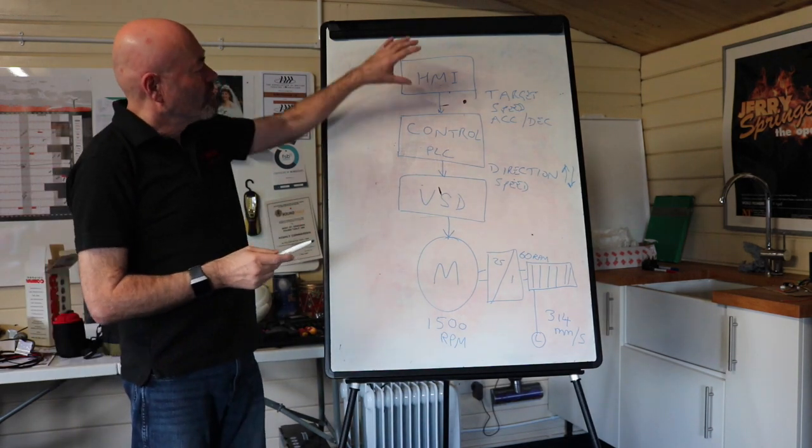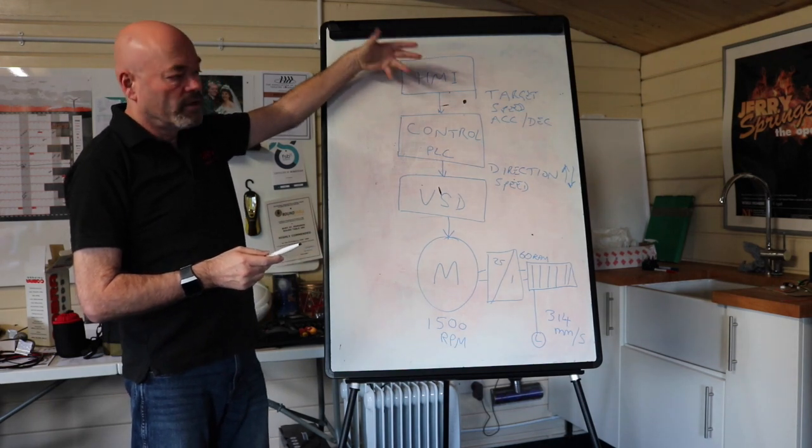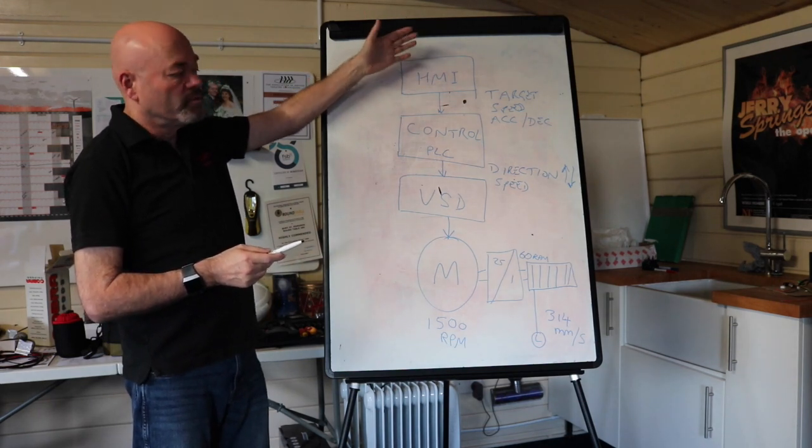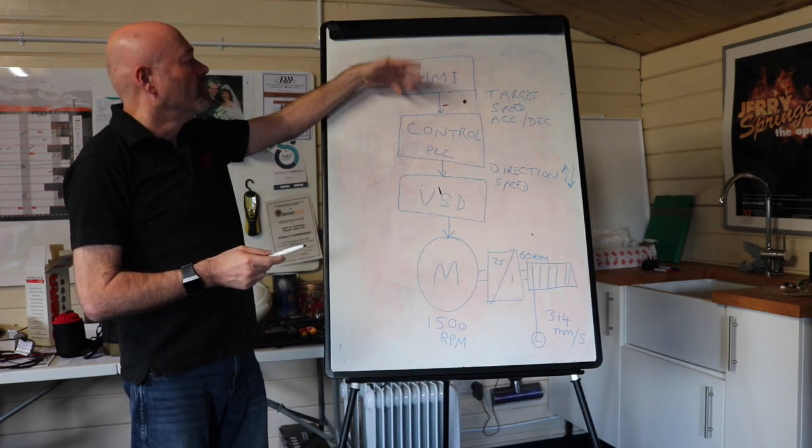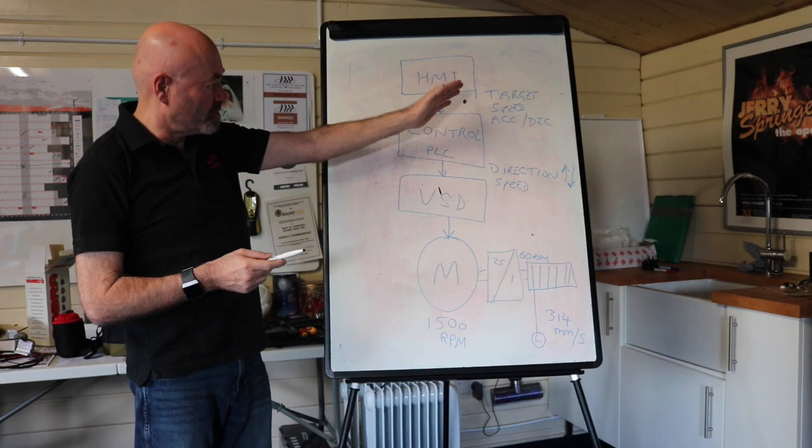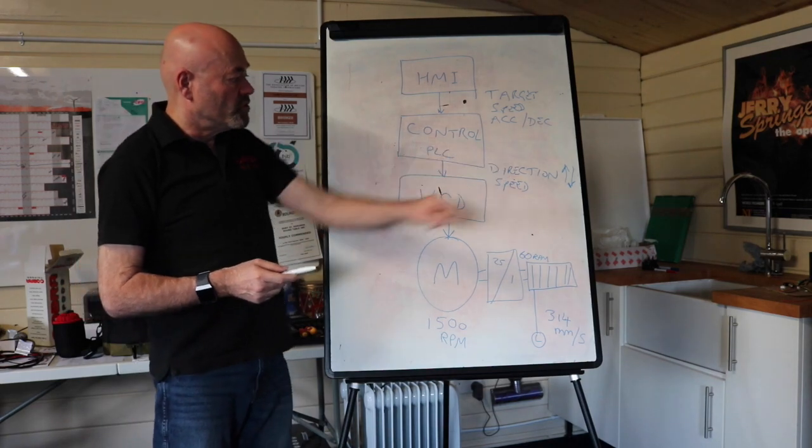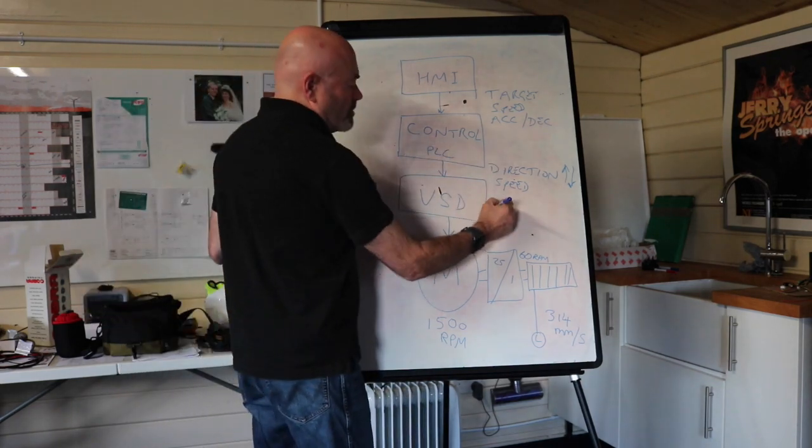So on the keysheet, on the HMI on the computer, we'll have the target position, the speed that we want it to travel at, how fast we want it to accelerate to that speed, how fast we want to decelerate. And then the control, the PLC, will take that information and turn that into direction and speed to give to the variable speed drive.